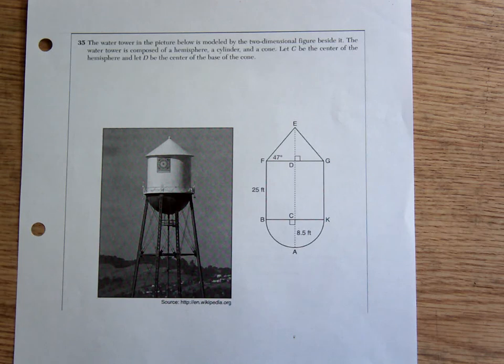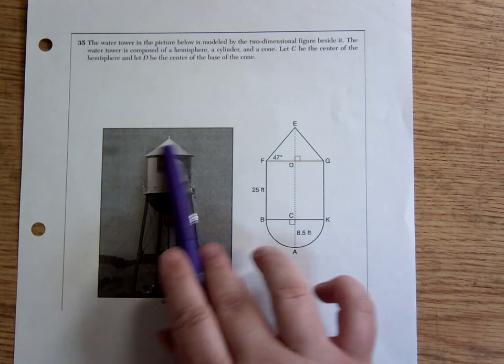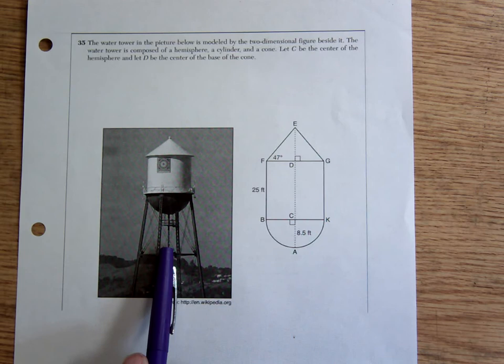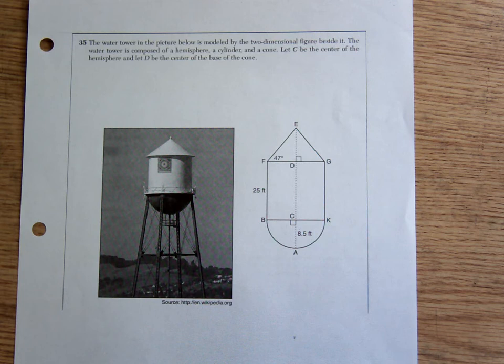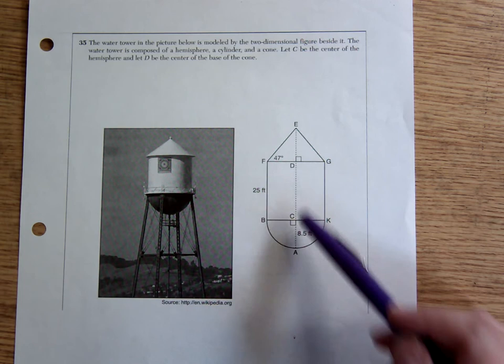Hello geometers. A couple of days ago in our unit on geometric solids, we encountered this problem which is about modeling a water tower and looking at its volume. It says the water tower in the picture below is modeled by the two-dimensional figure beside it. The water tower is composed of a hemisphere, that's the bottom part, a cylinder around the middle, and a cone on top.